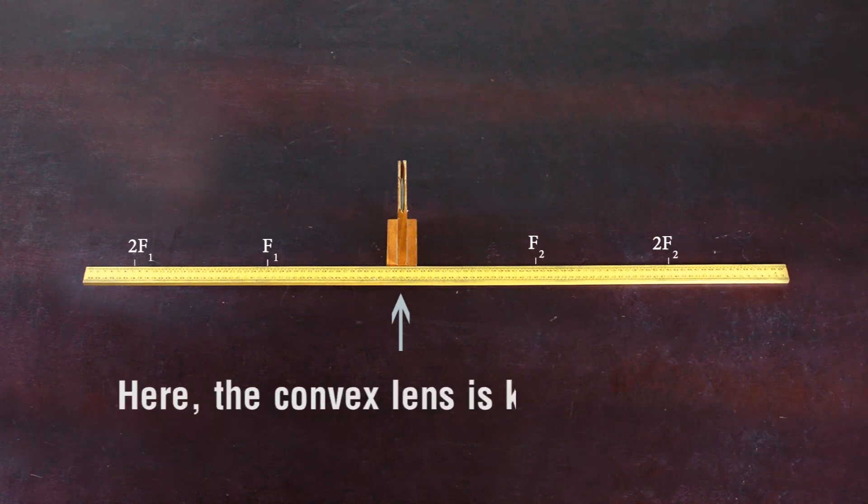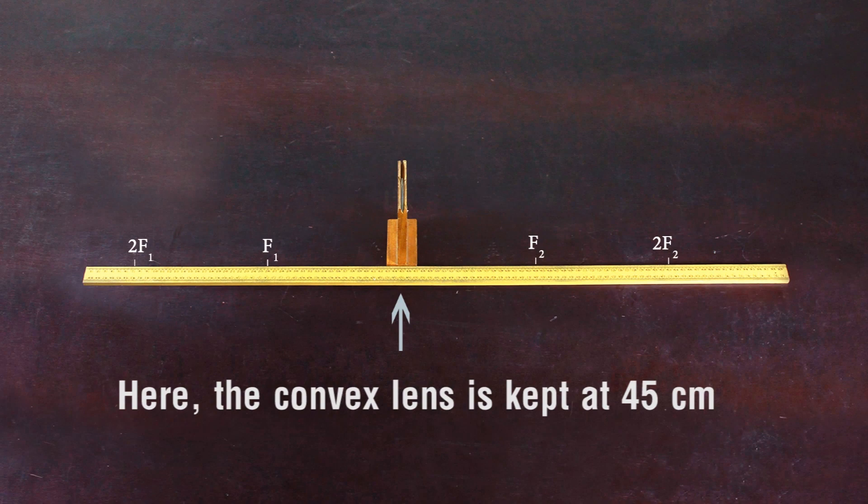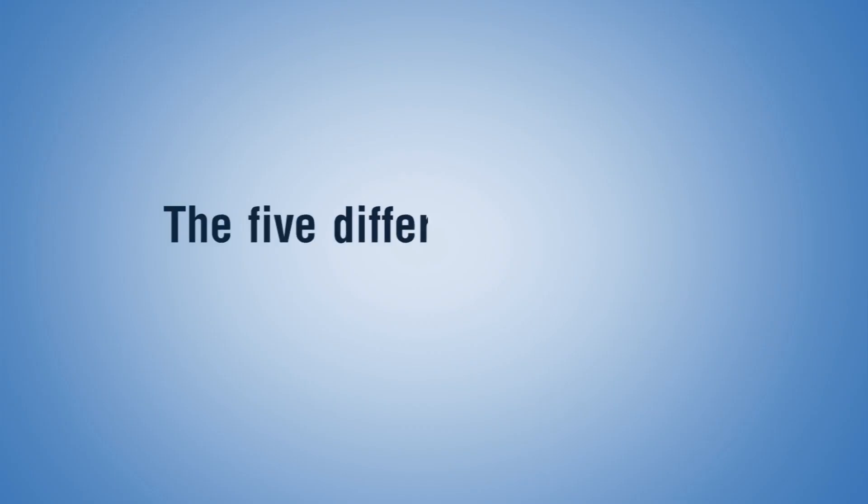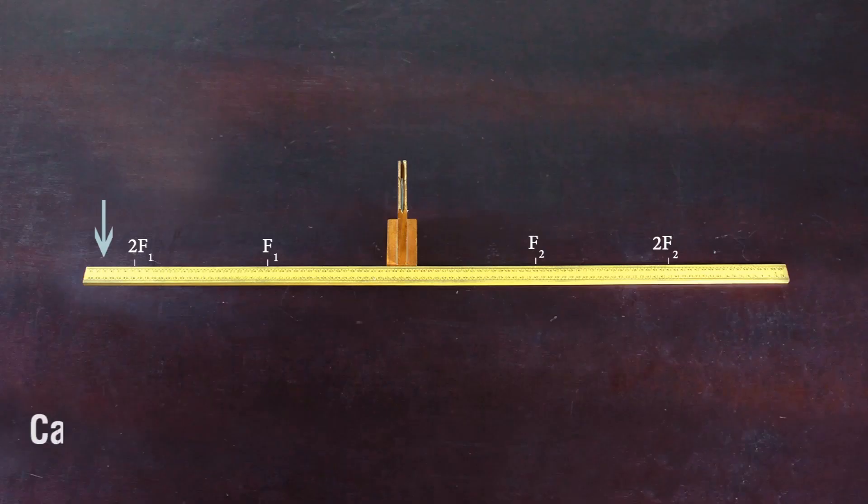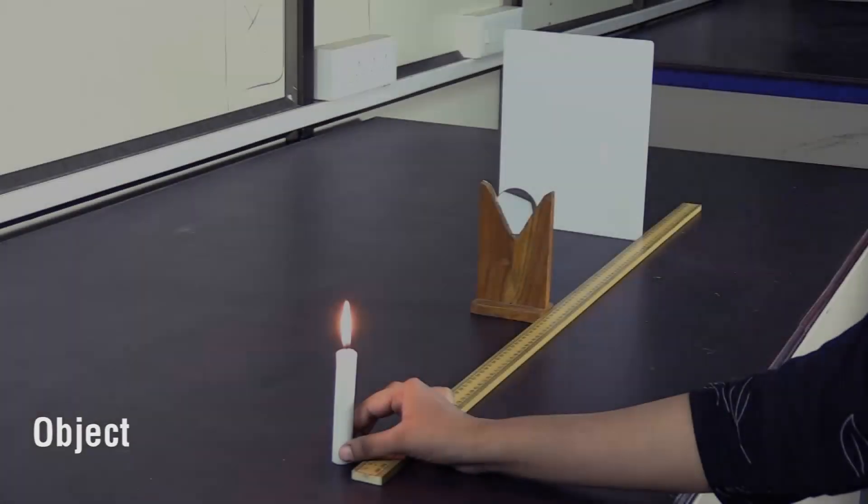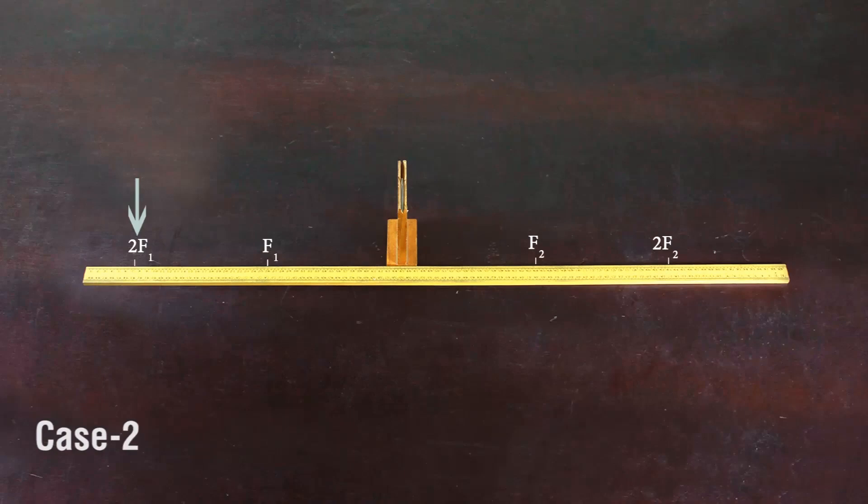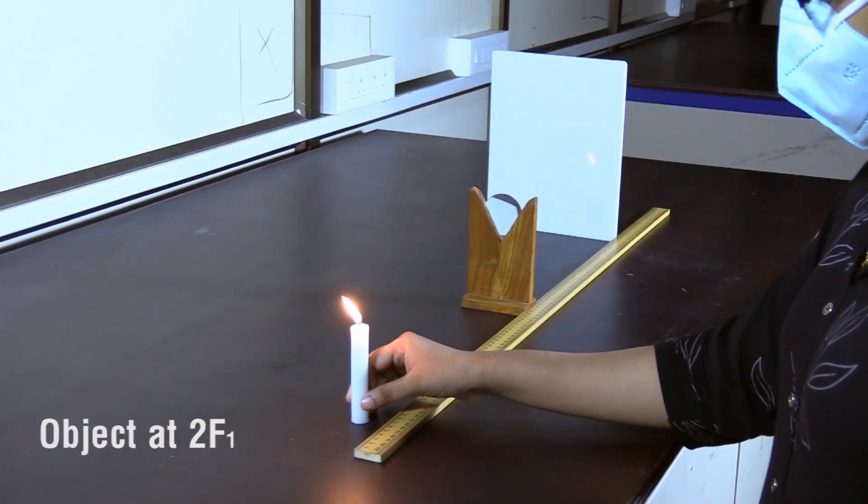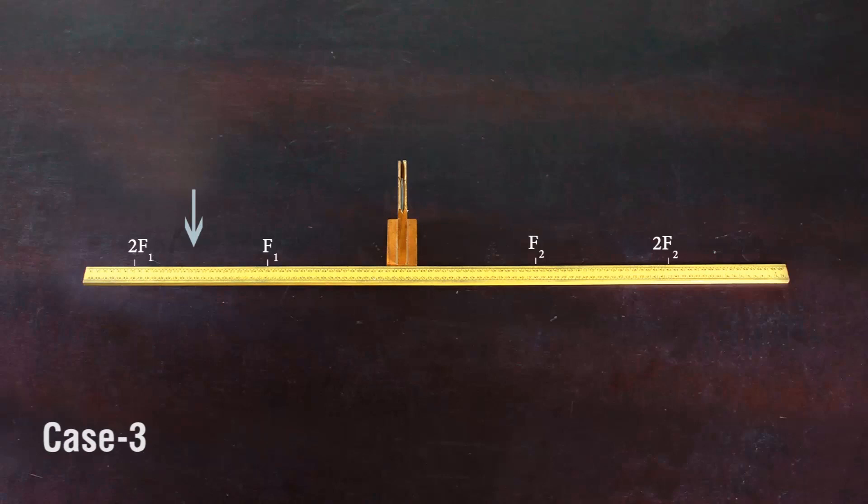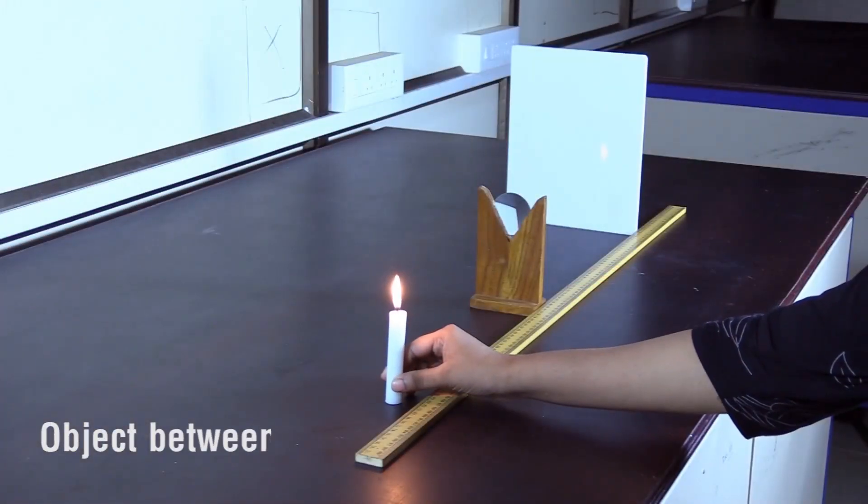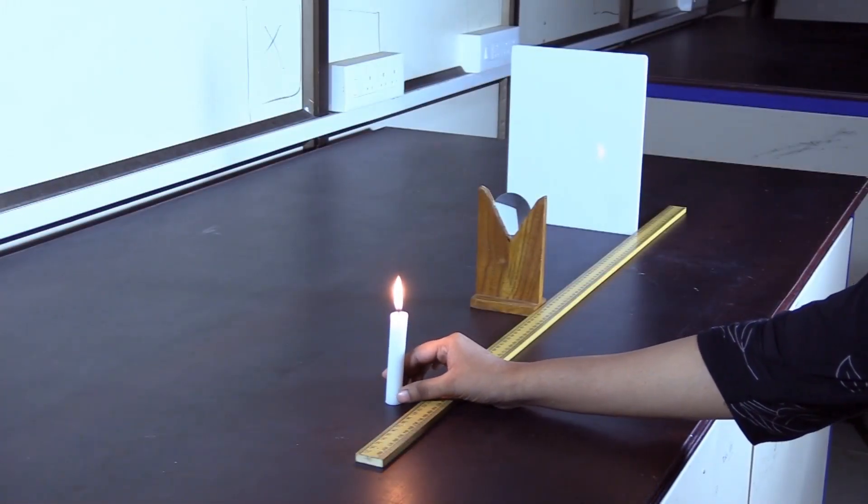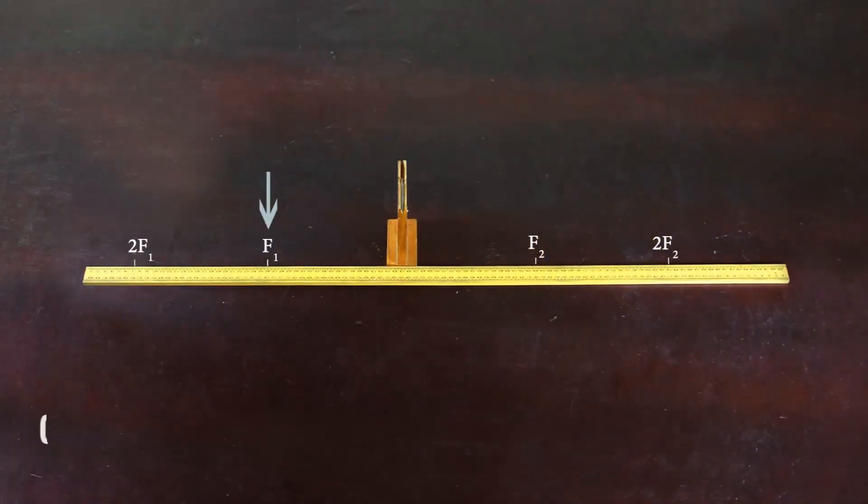We will study the image formation of a convex lens with reference to these points. The five different cases are: Case 1, object beyond 2F1. Case 2, object at 2F1. Case 3, object between F1 and 2F1.